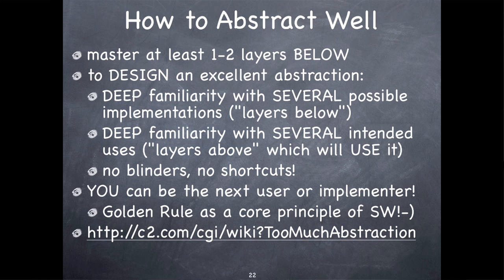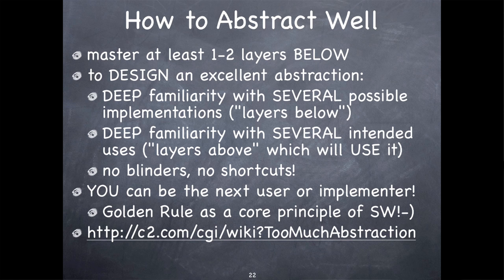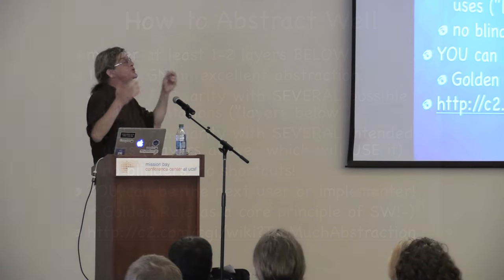I will actually try to mention how to abstract well. You have to master at least one or two layers below the one you're designing the abstraction at — to understand how, in several ways, that abstraction could be implemented. If there's only one way the abstraction can possibly be implemented, it's not a real abstraction; it masquerades as one. It's really as concrete as the only possible implementation. Better be deeply familiar with several possible implementations. It's best if you also think from the other side — several intended uses. How are different systems going to use this interface? You can be the next user of that interface, or even more likely, the next implementer. The golden rule — not doing to somebody else what you wouldn't want done to yourself — is actually a core principle of software development.